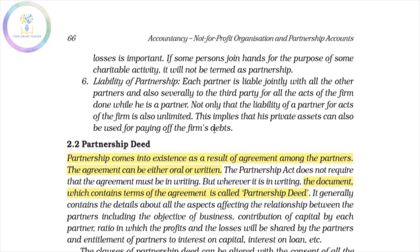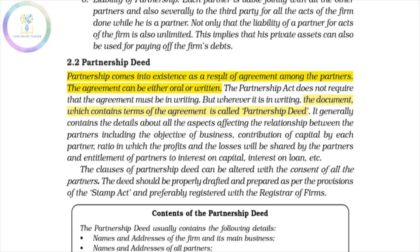Partnership comes into existence as a result of an agreement among the partners. The agreement can be either written or oral. Wherever it is in writing, the document which contains the terms of the agreement is called the Partnership Deed. The partnership deed contains the terms and conditions of the partners and their agreement.